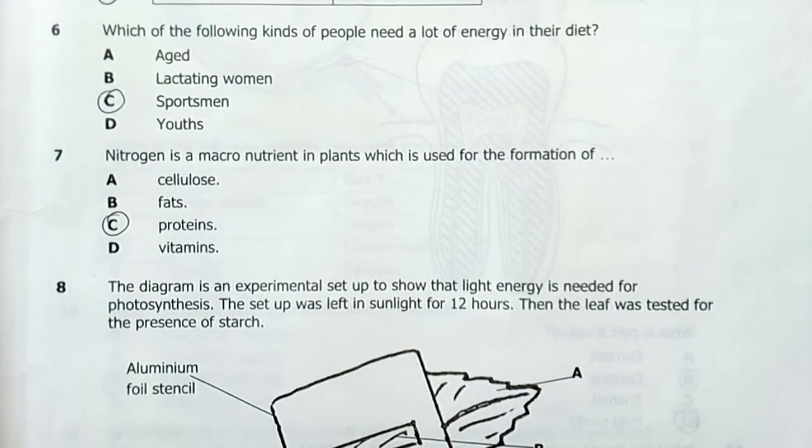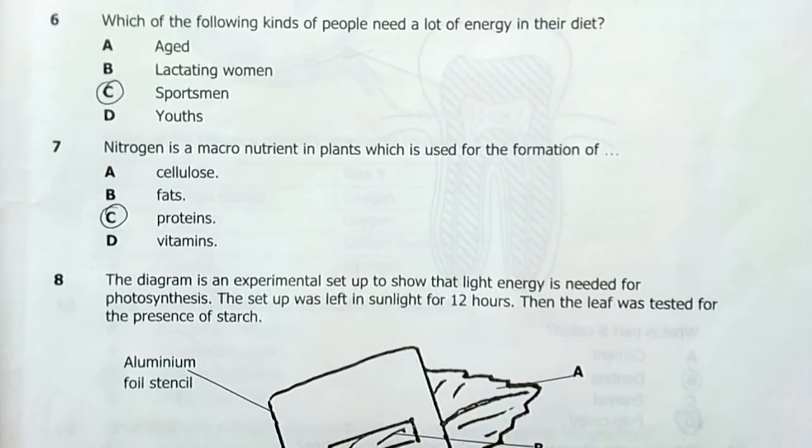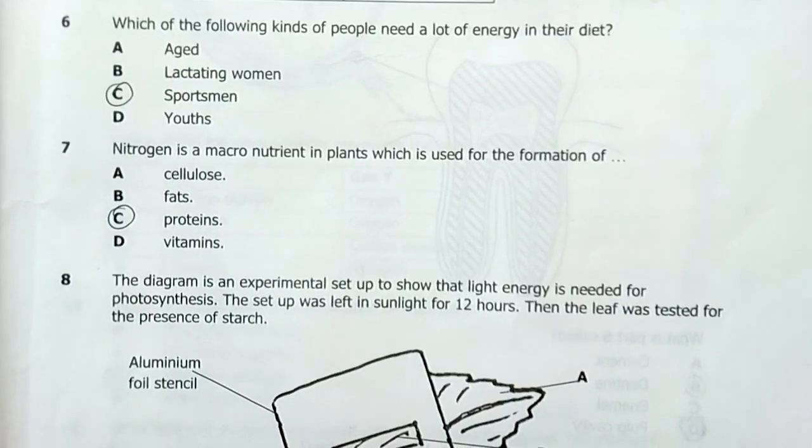Number seven, nitrogen is a macronutrient in plants which is used in the formation of proteins. The answer is C.